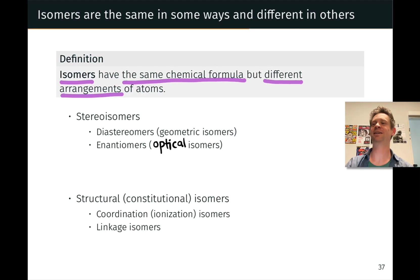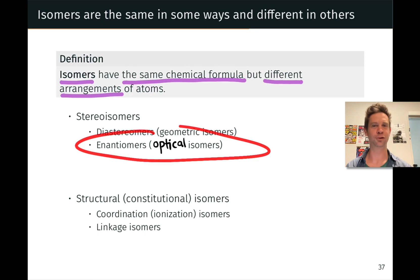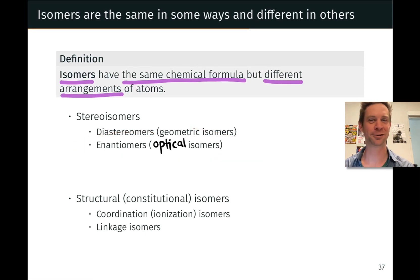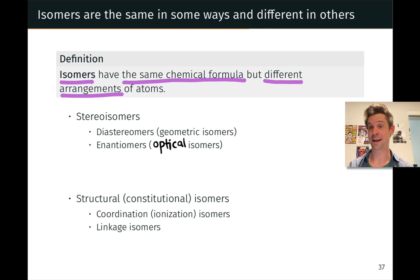There are isomers that are very similar to each other. In particular, from what's on the slide, enantiomers are about as similar as two chemical substances can get while still being different. There are other isomers that are very different from each other — for example, linkage isomers in a coordination chemistry context can have extremely different physical properties.